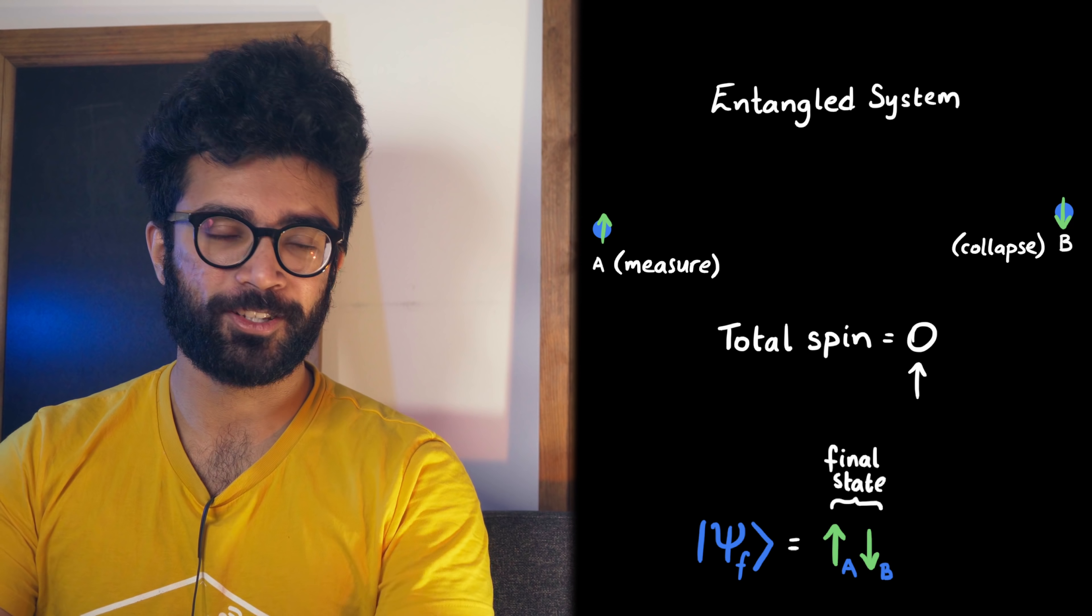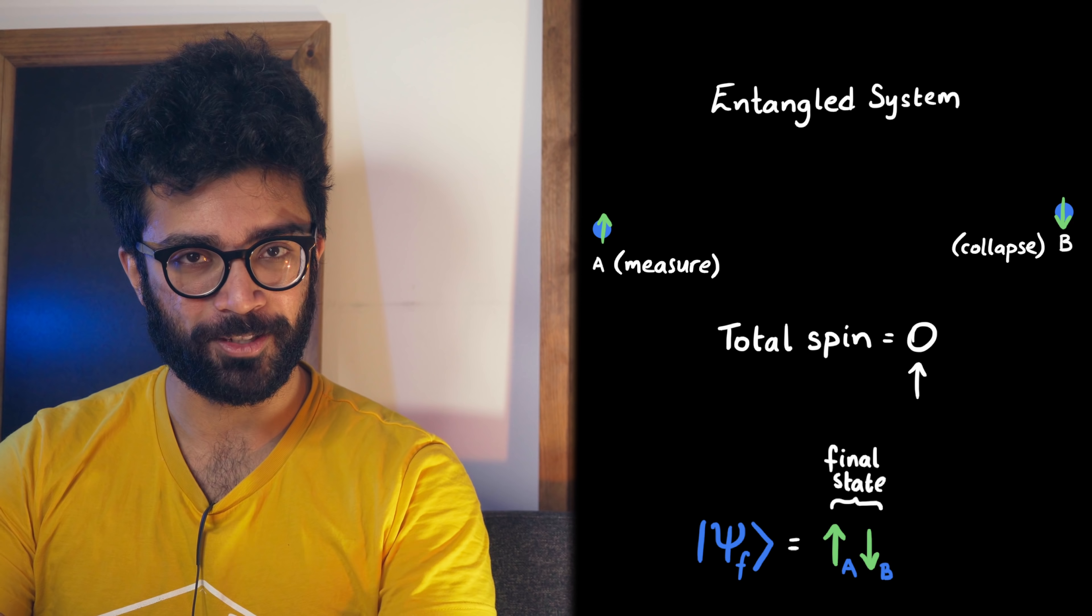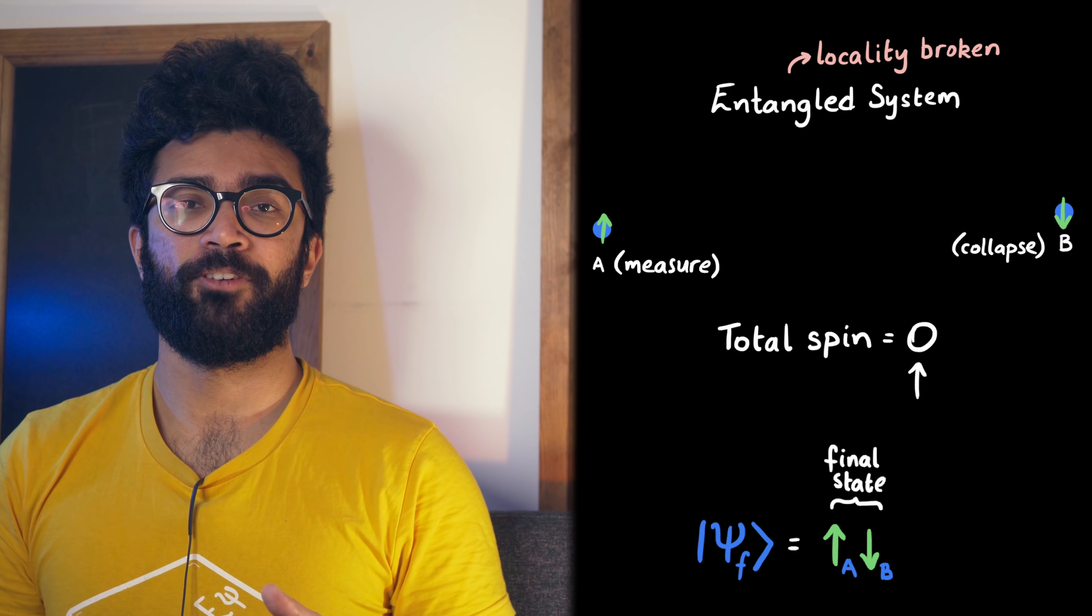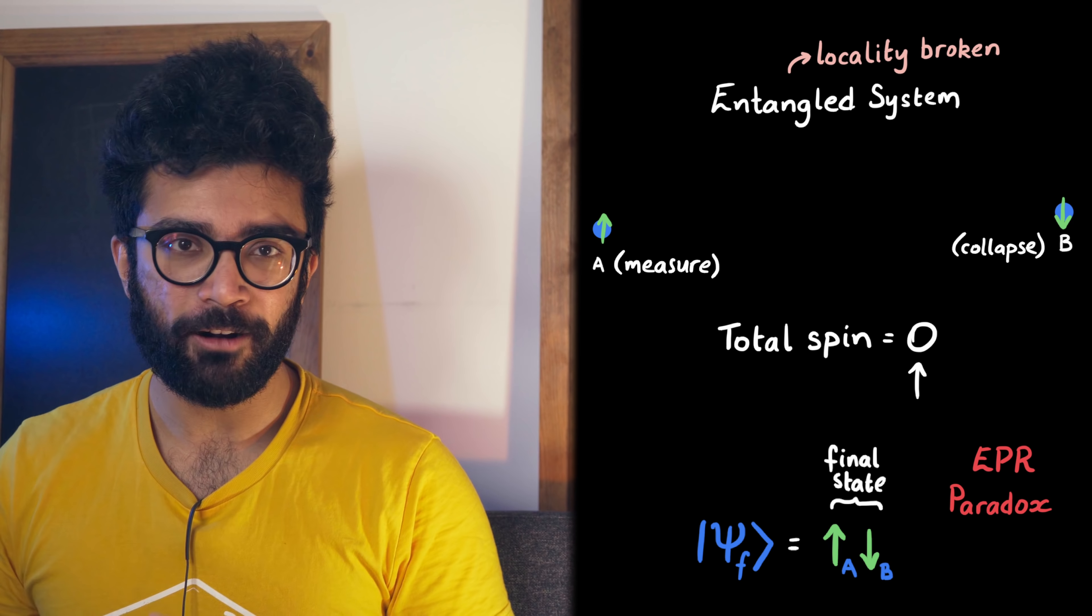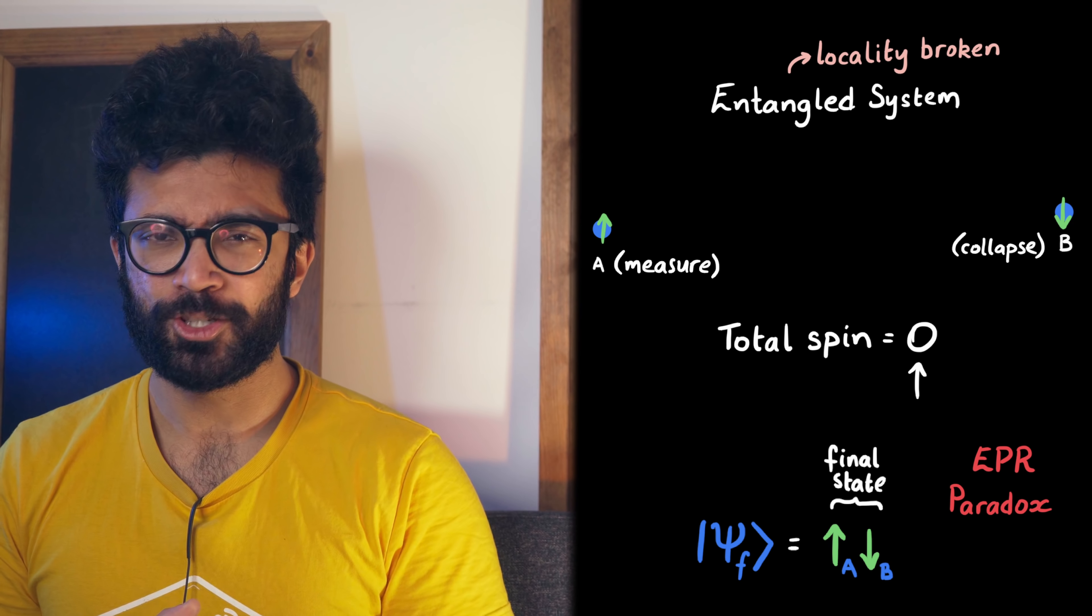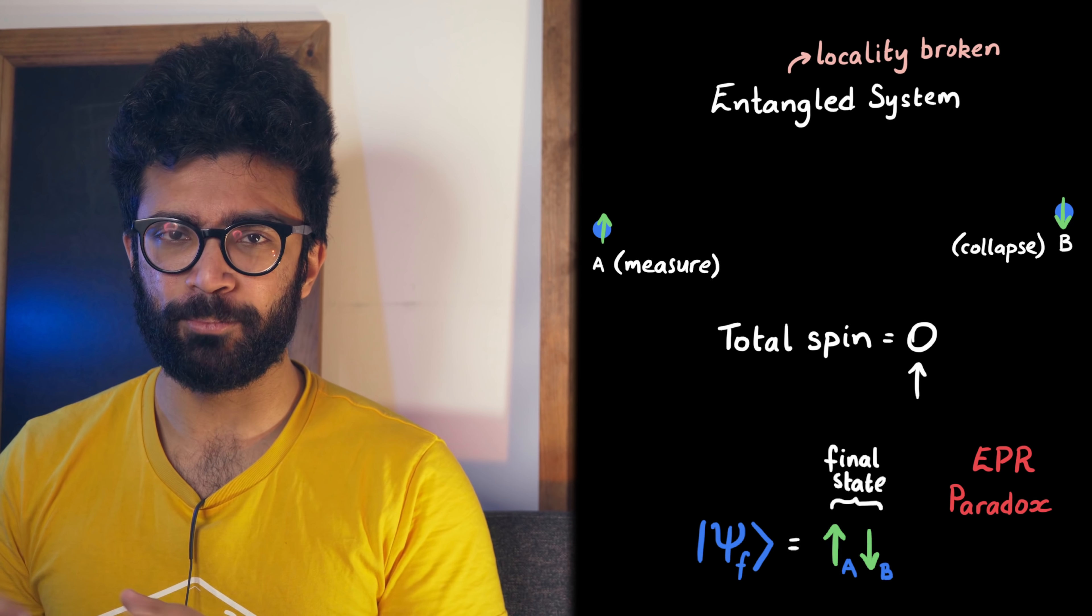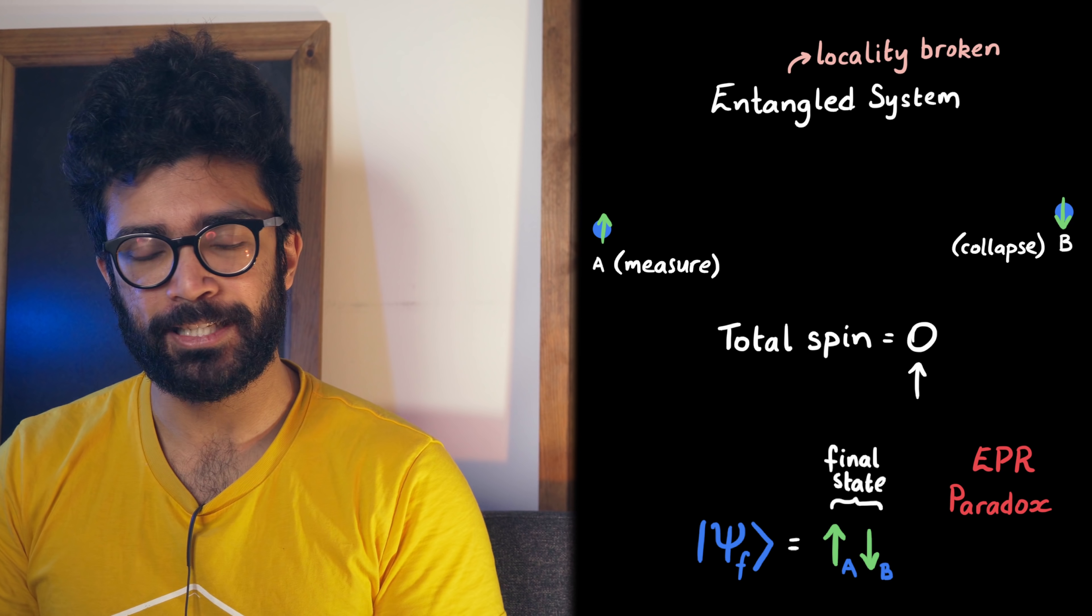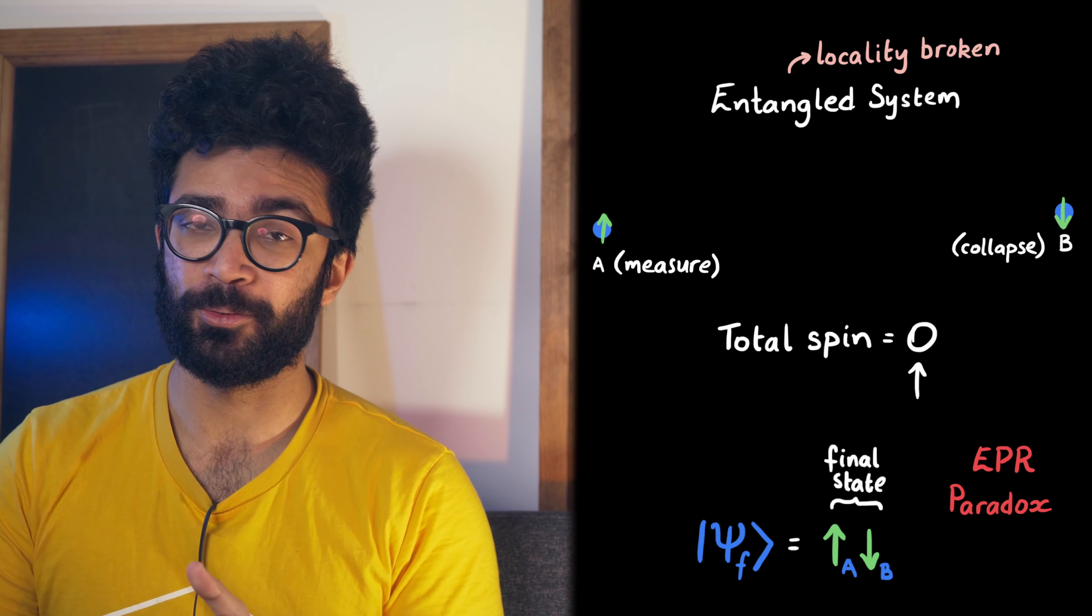Now, immediately is obviously faster than the light could travel between the two particles, so this is the confusing thing. Now, what I've just described here is a very simplified version of the EPR paradox, used by Einstein to show that quantum mechanics must at least be slightly wrong, or incomplete, because it broke locality and determinism, which he thought was impossible. I've made a detailed video about the EPR paradox, which you can check out up here if you're interested.